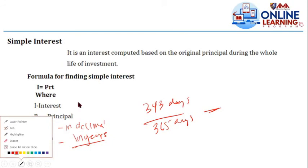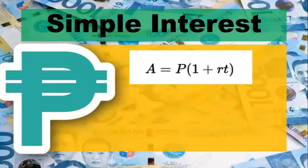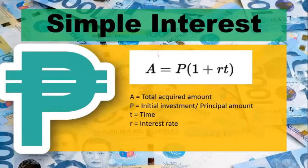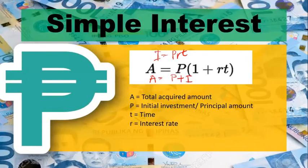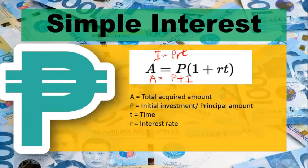There is another formula related to simple interest. The difference from I = PRT is that A adds the invested principal amount plus the interest amount. So A is the total acquired amount. For example, if you invest 5,000 and it becomes 5,500, the 5,500 is A. The formula is: A = P(1 + RT), where A is total acquired amount, P is principal, T is time in years, and R is interest rate.